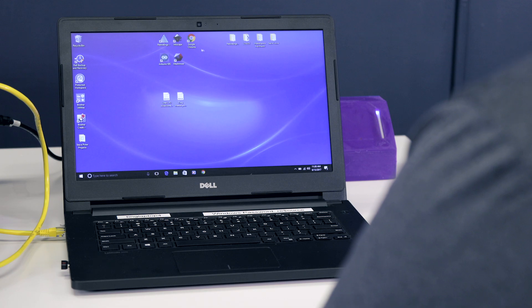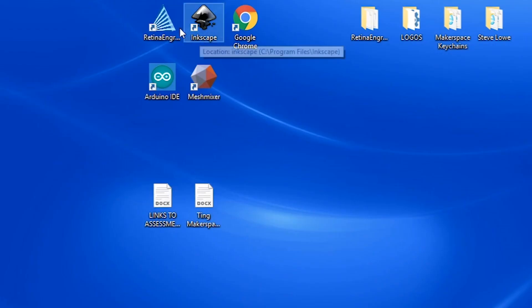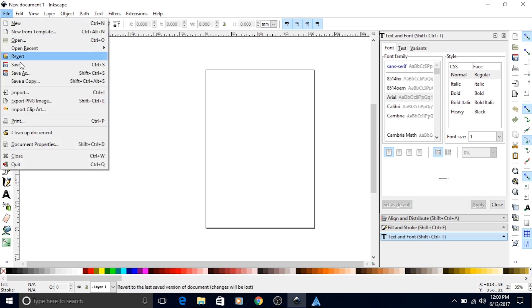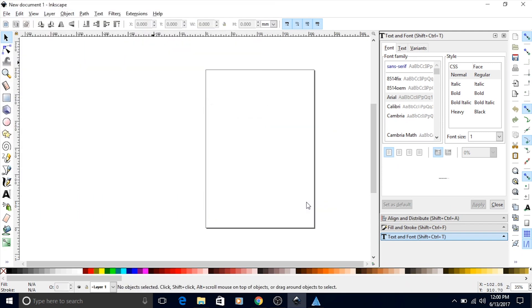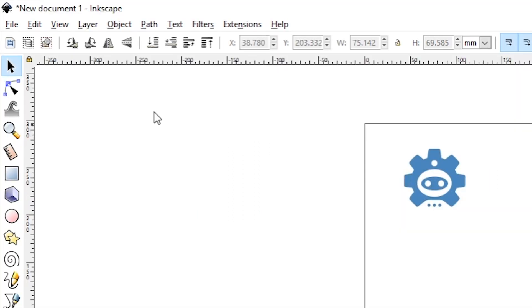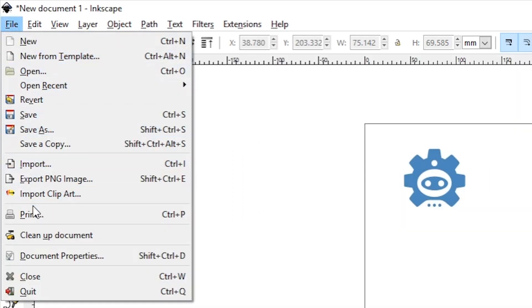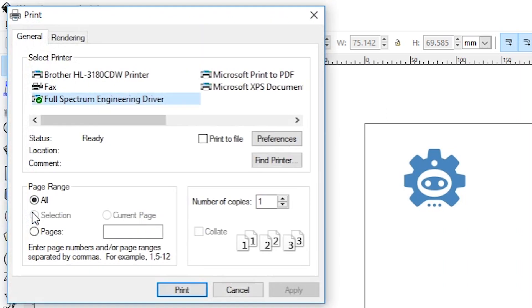Getting started, we will launch the design software Inkscape and the laser controller software Retina Engrave. We use Inkscape to import designs and vectorize them so the laser will know how and where to focus. Once we have our design made up or imported, we will simply push print. Select the Full Spectrum Engineering driver and send it to Retina Engrave.